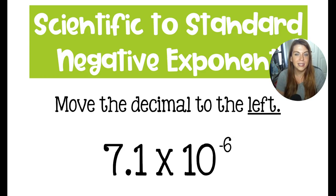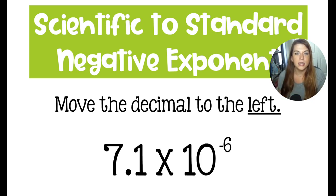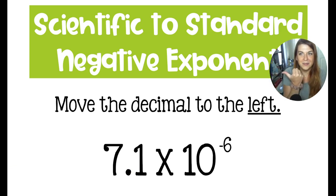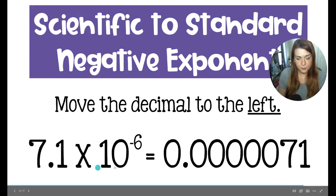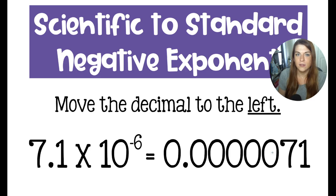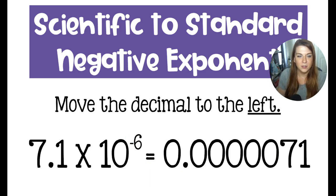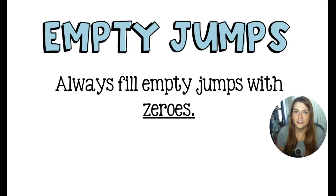Negative exponents indicate a small number. So if I have a scientific notation with a negative exponent and I want to turn that into standard notation, I'm going to move my decimal in such a way that I get a small number — to the left. I'm going to move the decimal in 7.1 times 10 to the negative sixth to the left six times. So here we would have five zeros in front of the seven and the one. The exponent does not match the number of zeros — the exponent matches the number of times you have to move the decimal. Anytime there is an empty jump when you're doing these conversions, you're going to fill them in with zeros.